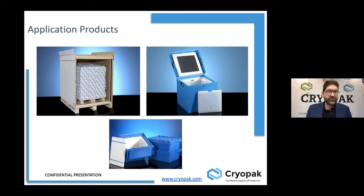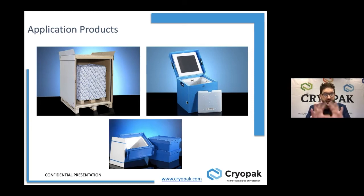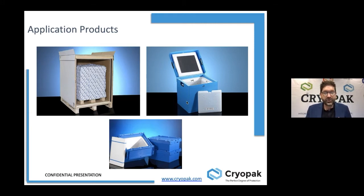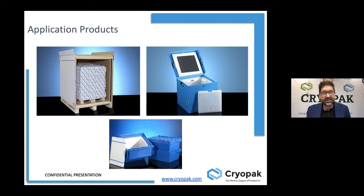For reverse logistics, we need more specialized solutions — packaging designed for reuse. There are two ways to design packaging. One is single-use design: we design around the product, building the most efficient packaging in terms of cost, performance, dimension, and weight. But for a reuse program, we take a different approach — we go from the logistic requirement, from the outside to the inside. We build packaging from standard pallet size, plane size, and truck size, creating the best ratio between external and internal dimensions.